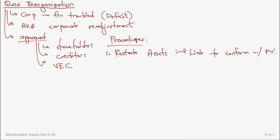The goal is to eliminate the deficit entirely, bringing retained earnings to zero. This is why it is called a fresh start — as though the corporation has not yet operated. The choice of method depends on whether the problem specifies recapitalization or revaluation.